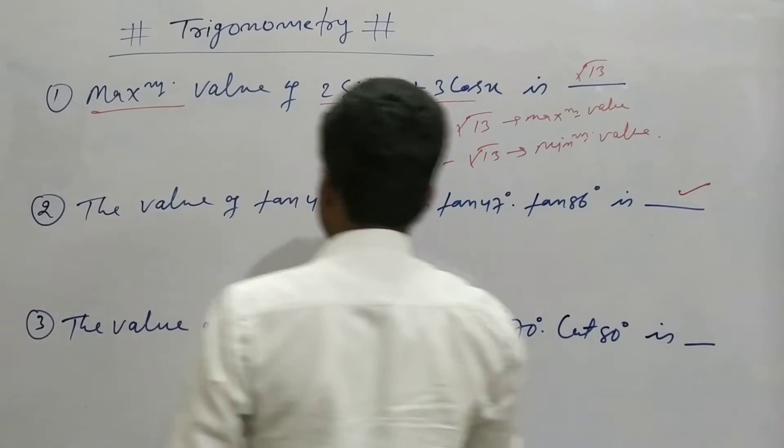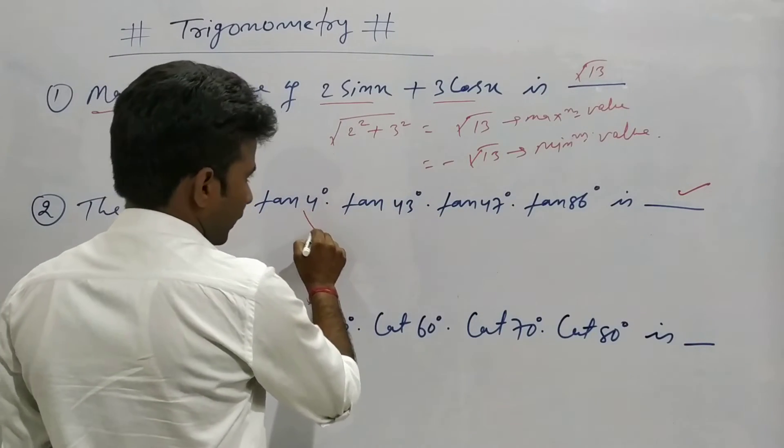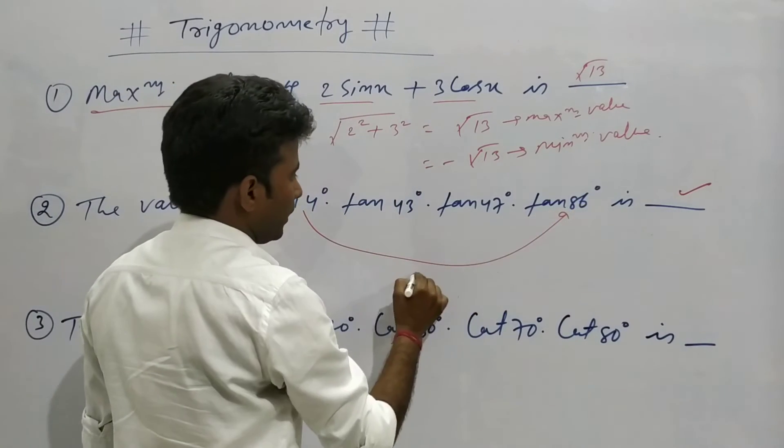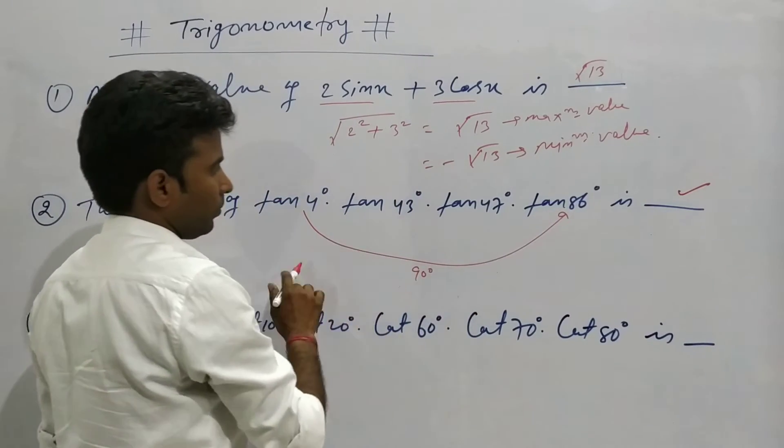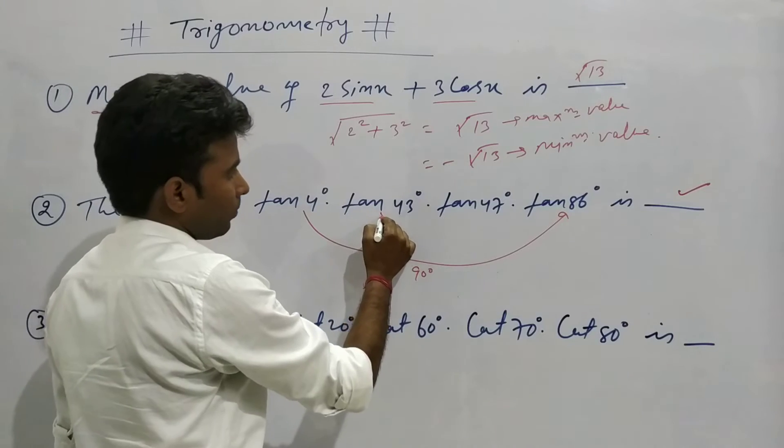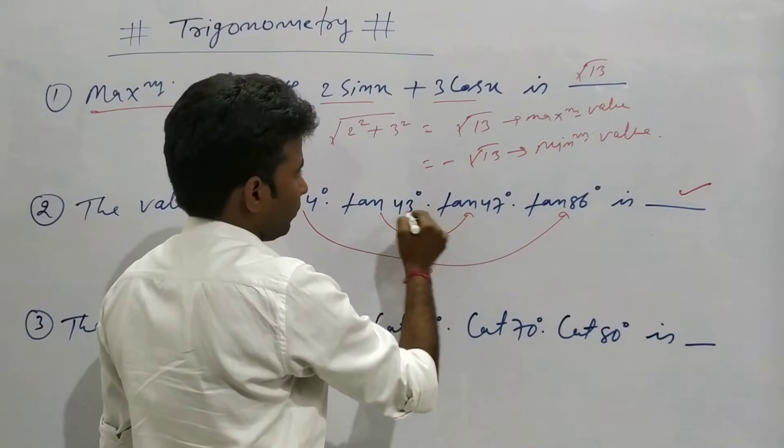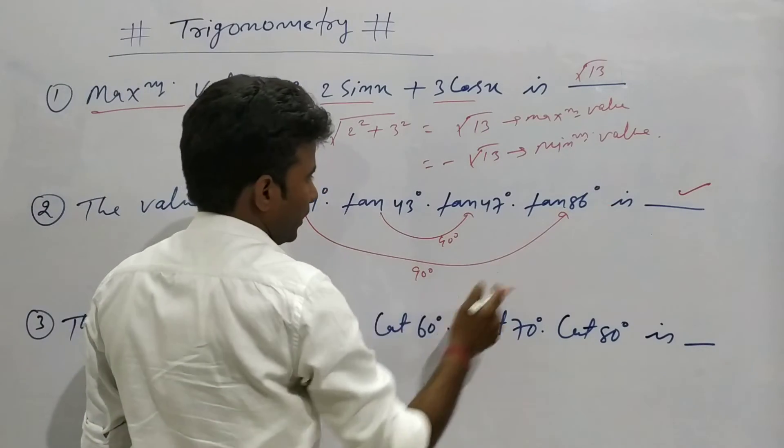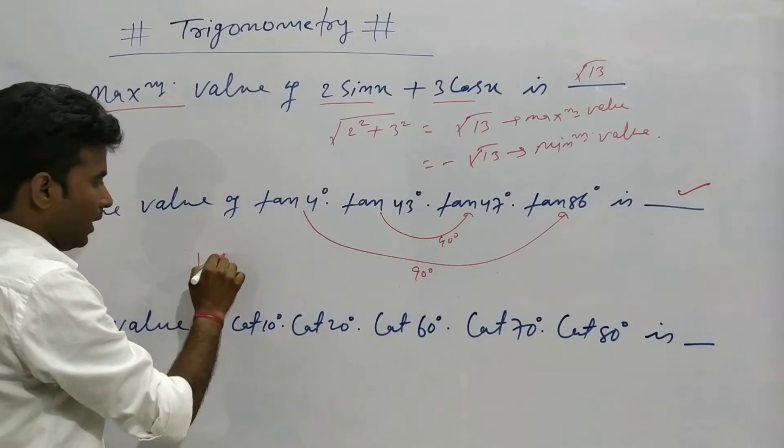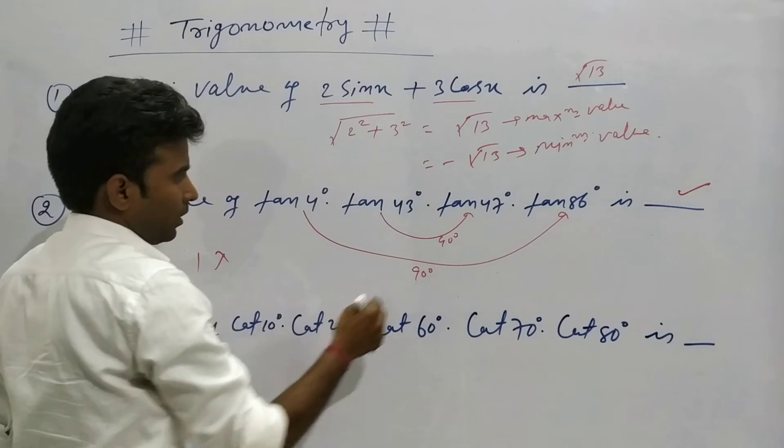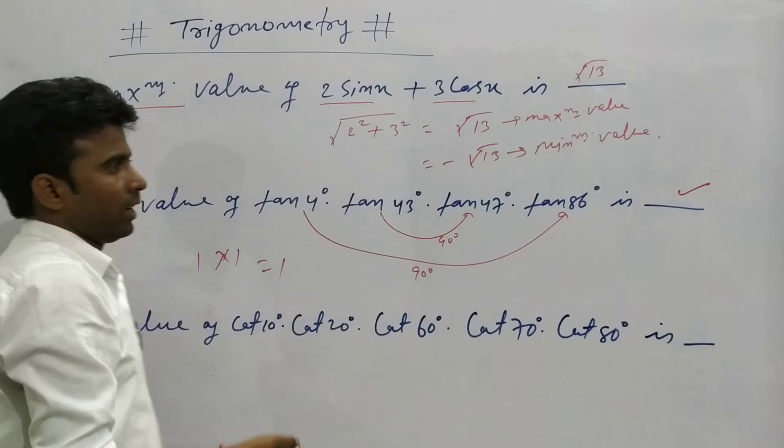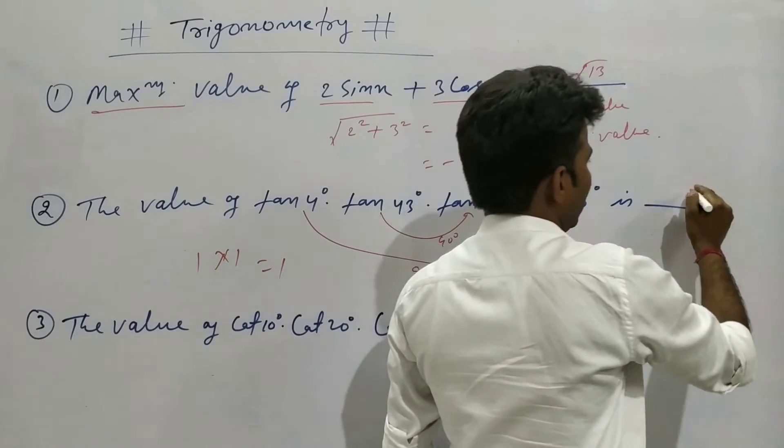Using the same approach, we pair the angles. 4° and 86° add to 90°. 43° and 47° also add to 90°. When complementary angles multiply, their product equals 1. So the answer is 1 × 1 = 1.